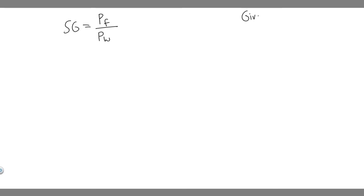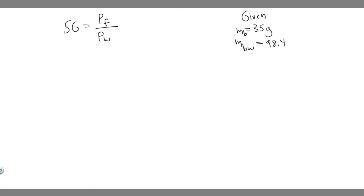The first thing we should do is write down the given. They're giving us the mass of this bottle when empty: MB = 35 grams. We're also given the mass when it's filled with water, MBW = 98.44 grams, and the mass when it's filled with the fluid, MBF = 89.22 grams. So these are all the things we're given.